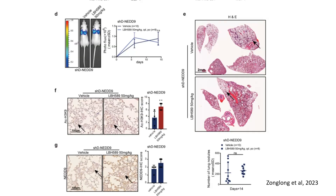This slide highlights the role of NET9 in breast cancer metastasis, focusing on how its knockdown influences tumor progression and lung metastasis in vivo. Understanding the downstream effects of NET9 on metastasis is critical for developing potential therapeutic strategies in aggressive cancers like triple-negative breast cancer. Panel D shows luciferase-based bioluminescence imaging of mice with NET9 knockdown compared to vehicle controls. The photon flux in NET9 knockdown mice treated with LBH589 is significantly reduced, indicating a decreased metastatic burden and demonstrating that NET9 plays a crucial role in driving metastasis.